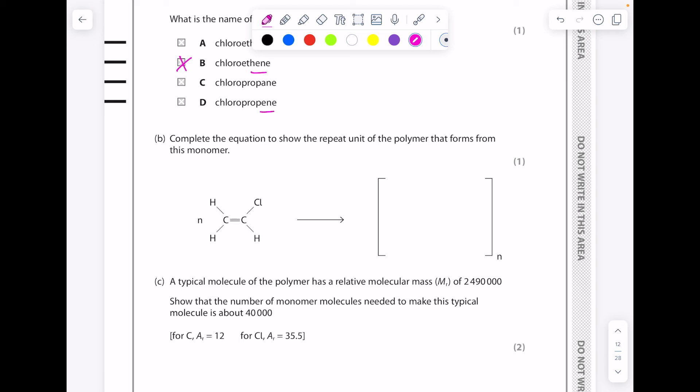Complete the equation to show the repeat unit of the polymer that forms. So we break the double bond, elongate the bonds, and put all the other atoms back in. And that's the most straightforward way of getting those marks.